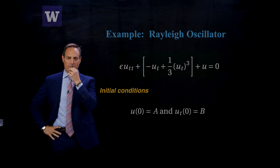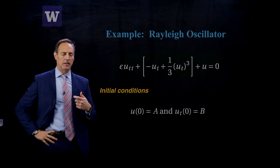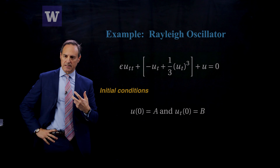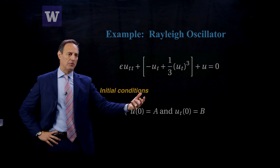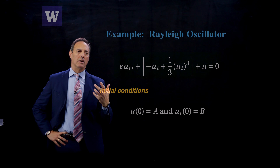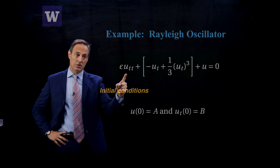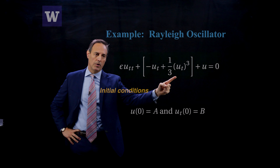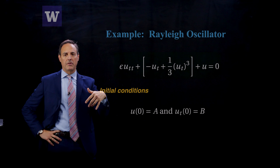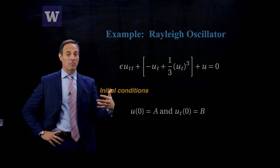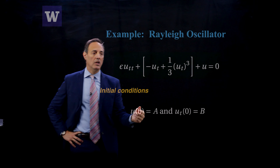The example I'm going to give is called the Rayleigh oscillator. It's very much like the van der Pol in the sense that it exhibits a limit cycle, where the middle term acts like damping if the amplitude is too large, and like exponential gain if the amplitude is too small. The epsilon here is in front of the highest derivative — epsilon U_tt — and there's a cubic term, making this a fully nonlinear problem.